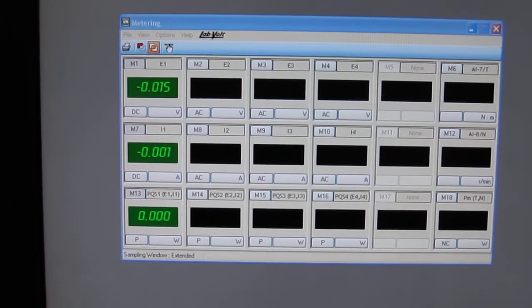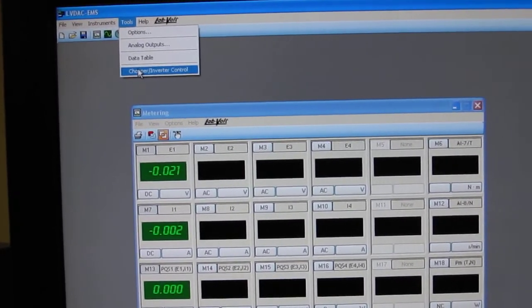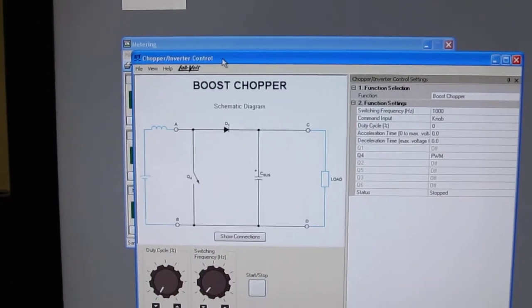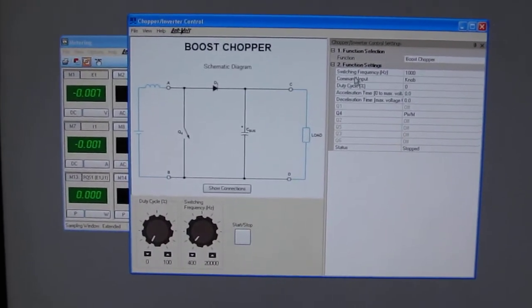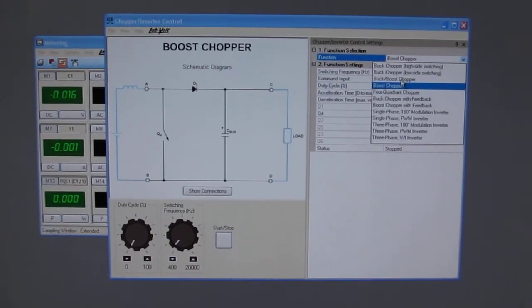Now into the tools, I can go to the chopper inverter control. Then I'll drag that a little bit on the side so we still see the metering. I will select in that case a buck-boost chopper.